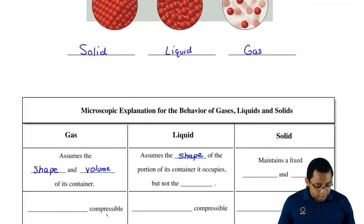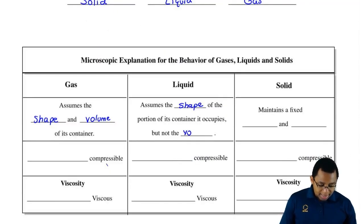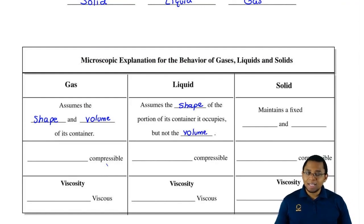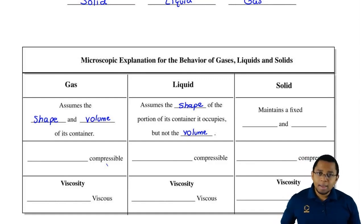But if there's not enough liquid, it can't take up the volume. Liquids usually just take up the shape, but not necessarily the volume. If there's not enough liquid to fill up the entire container, then it won't take up the volume. Solids, we're going to say maintain a fixed shape and volume.